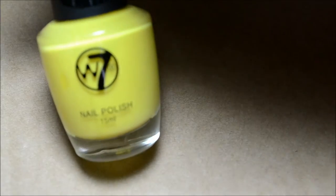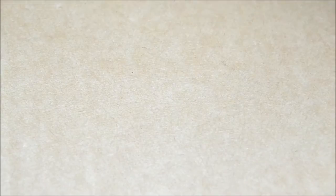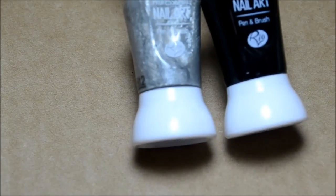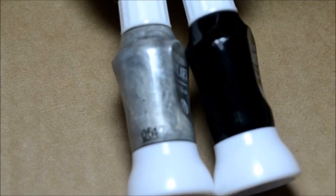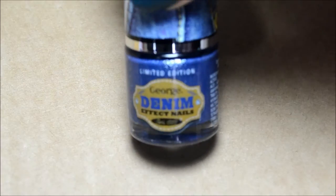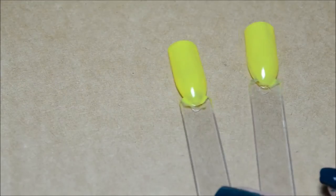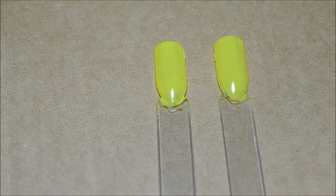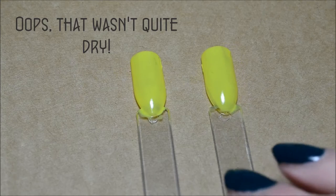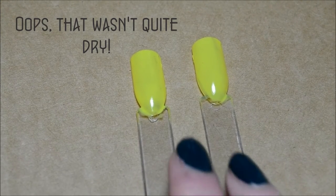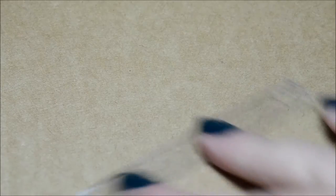So, the nail varnishes that I'm going to be using today are the W7 in Hip Hop, which is a really bright canary yellow. My Rio Nails brush and pens in black and silver. And denim in blue from Georgia Asda. It's actually quite a good little nail varnish. And I've actually kicked us off by doing two coats of the yellow onto the nails to get us started.